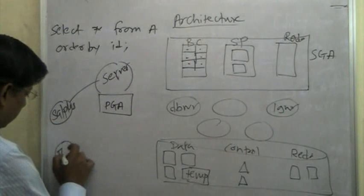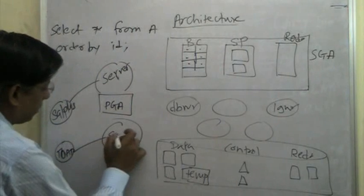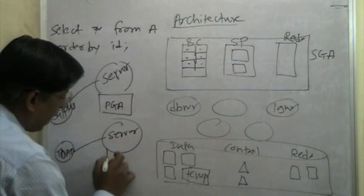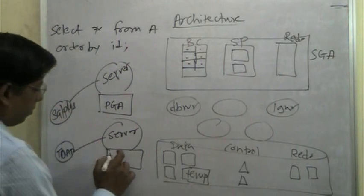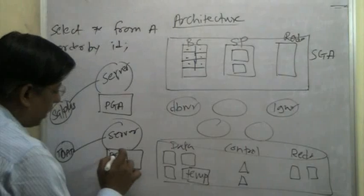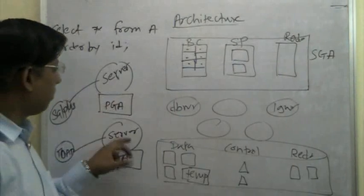If there is another thing, as I said, TOAD, it will have its own server process. And for that, there will be also a PGA. So, PGA is a memory area which is associated with each server process.